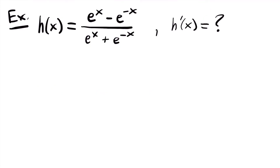Here we have h of x equal to (e to the power of x minus e to the power of negative x) divided by (e to the power of x plus e to the power of negative x), and we want to find h prime of x. To find the derivative, we're going to use the quotient rule because we have a quotient of two separate functions — one in the numerator and one in the denominator.